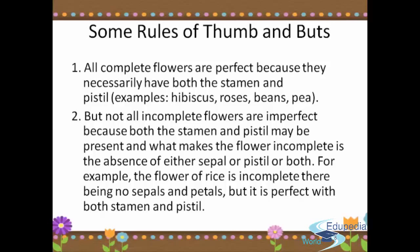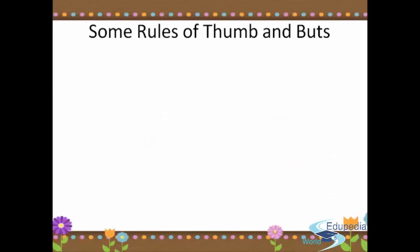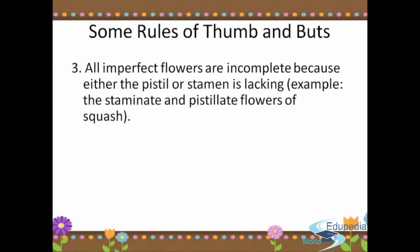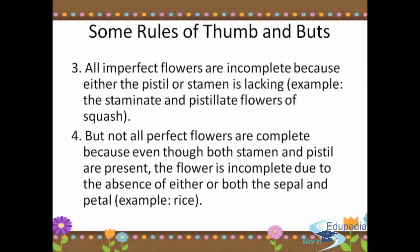For example, the flower of rice is incomplete — there being no sepals and petals — but it is perfect, with both stamen and pistil. Third, all imperfect flowers are incomplete because either the pistil or stamen is lacking — for example, the staminate and pistillate flowers of squash. But not all perfect flowers are complete, because even though both stamen and pistil are present, the flower is incomplete due to the absence of either or both the sepal and petal — for example, rice.